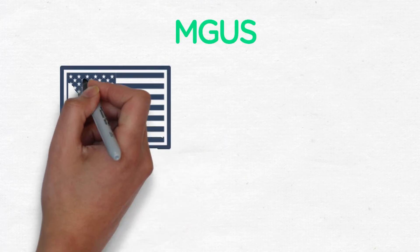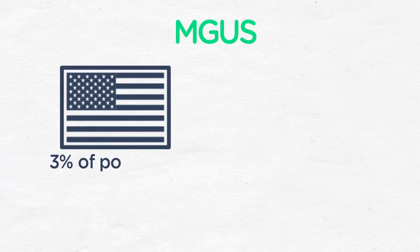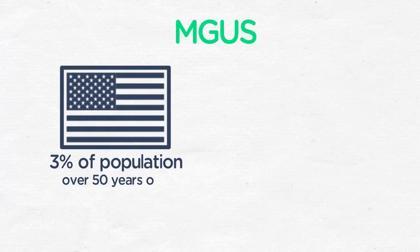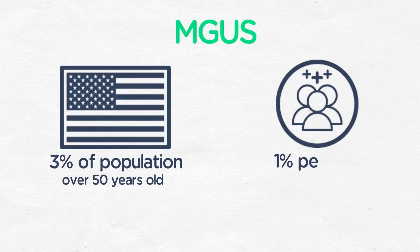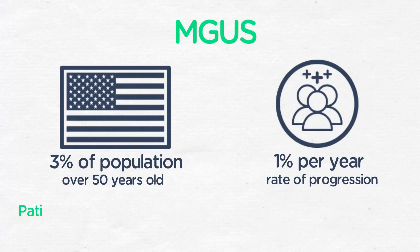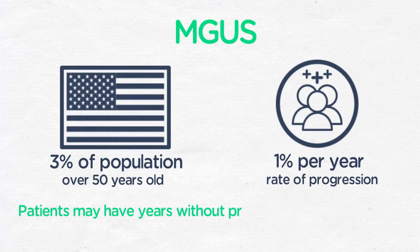MGUS is a very common disease. We see it in 3% of the population over the age of 50. Smoldering myeloma is less common, but the rate of progression of MGUS is 1% per year, and those patients may have many years without ever progressing into real myeloma.